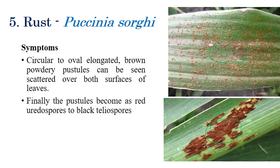For rust in maize, red or brown powdery rust pustules appear on both surfaces of the leaves — sometimes on the upper surface and sometimes on the lower surface. Oval, elongated brown-colored powdery rust pustules can appear on both surfaces of leaves.